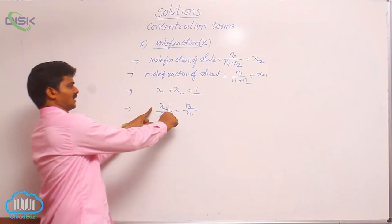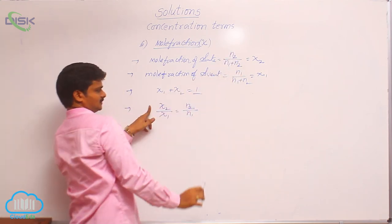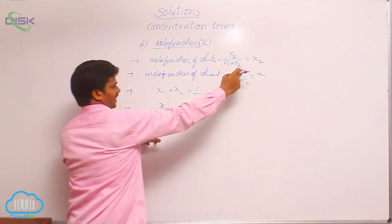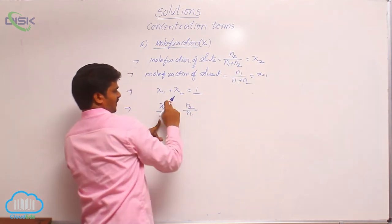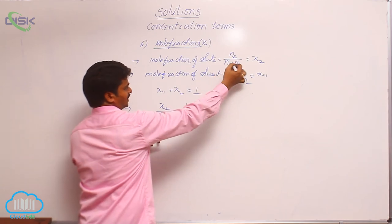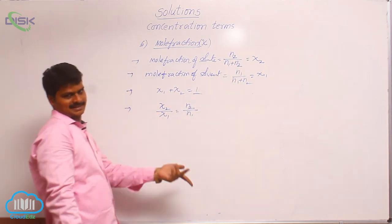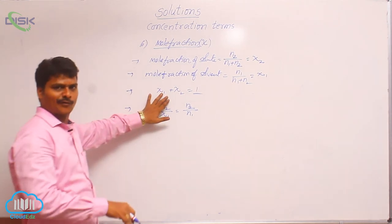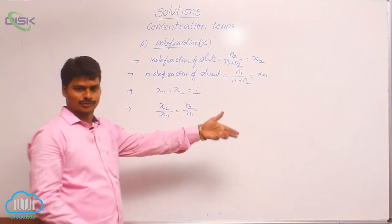Mole fraction of solute = n2 / (n1 + n2). Mole fraction of solvent = n1 / (n1 + n2). When you take the ratio, the denominators in both terms cancel. That is why the ratio of mole fractions equals the ratio of moles.